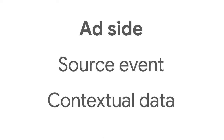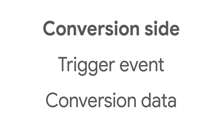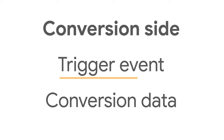To allow this to happen, ad tech developers need to configure code on both the ad side and on the conversion side. On the ad side, such as a publisher site, code is added to enable the browser to record clicks or views along with contextual data — that is known as a source event. On the conversion side, such as an online store, code is added to enable the browser to record when the user makes a conversion, such as a purchase — and that's known as a trigger event.